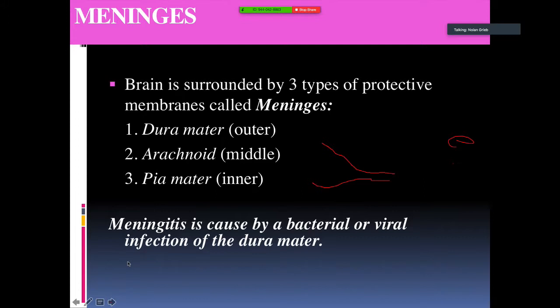The brain is surrounded by three types of protective membranes called meninges. The outer layer is the dura mater, the middle layer is the arachnoid, and the inner layer is the pia mater. Meningitis is caused by bacterial or viral infection of these meningeal layers — 'itis' meaning inflammation. This is dangerous because it occurs close to the brain.